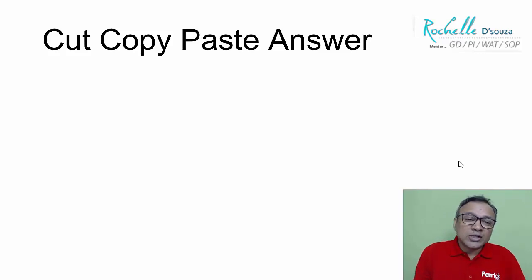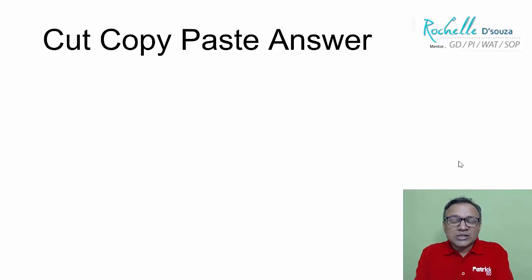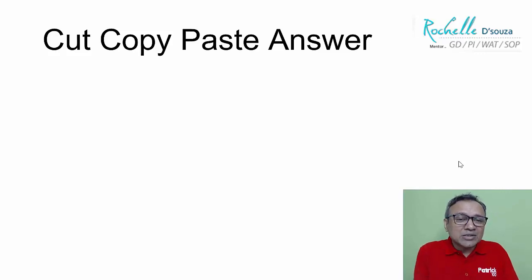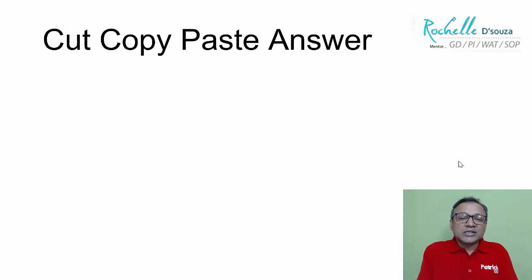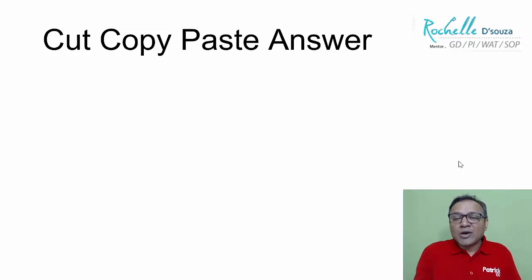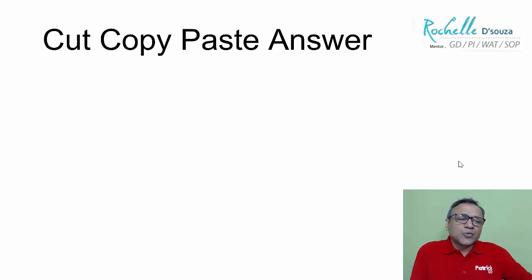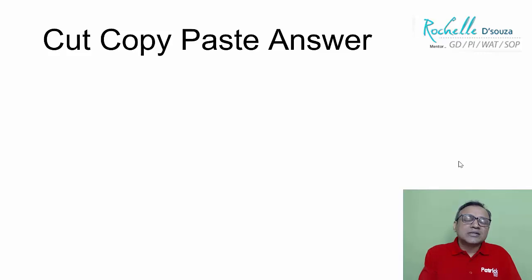When we have a question we don't know the answer for, we Google it. We try to find answers in different places and then give that same answer thinking it's a great answer. Or we go and ask a mentor, get an answer, and then try to answer the same question. That's a cut, copy, paste answer — you pick it up from somewhere else and try to answer with it. It doesn't help.